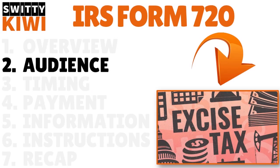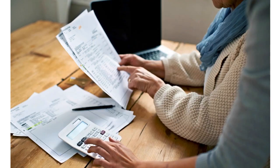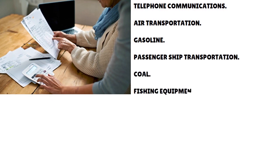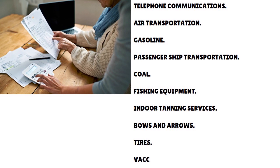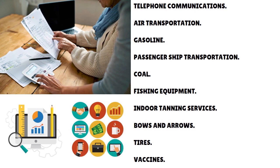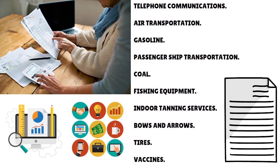Who is the audience for this excise tax? Your business needs to fill out IRS Form 720 if you sell goods or services that incur excise taxes. These products and services can include but are not limited to telephone communications, air transportation, gas, passenger ship transportation, coal, fishing equipment, indoor tanning services, bows and arrows, tires, and vaccines. If you need more information, go to the IRS website. And if your business does not deal with any of these products or services, you don't have to fill out the form.